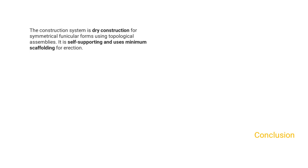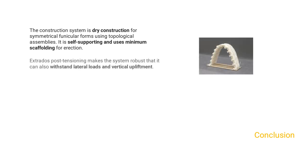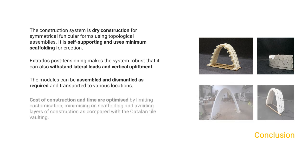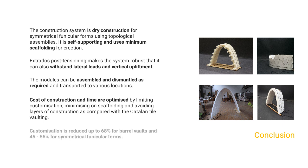The construction system is dry construction for symmetrical funicular forms using topological assemblies. It is self-supporting and uses minimum scaffolding for erection. Extra-dose post-tensioning makes the system robust enough to withstand lateral loads and vertical upliftment. Modules can be assembled, dismantled, and transported as needed. Cost and time are optimized by limiting customization and minimizing scaffolding — customization is reduced up to 68% for barrel vaults and 45–55% for symmetrical funicular forms, compared to Catalan tile construction.